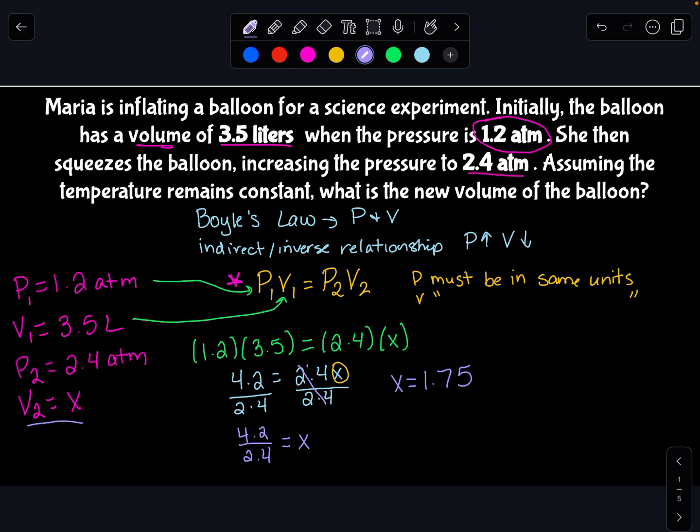4.2 divided by 2.4 means that x equals 1.75. Because I'm looking for V2, this 1.75 is going to be my V2. And since my initial volume was in liters, my final volume is in liters. So your answer to this equation is 1.75 liters.